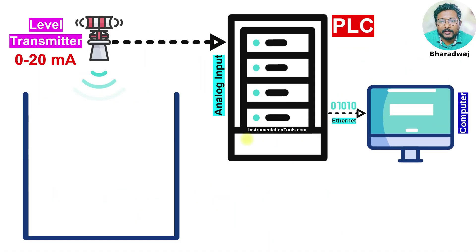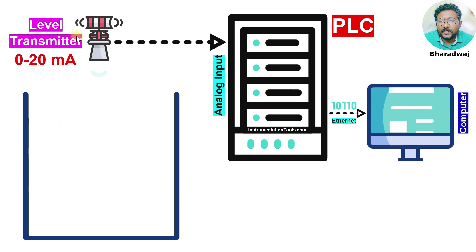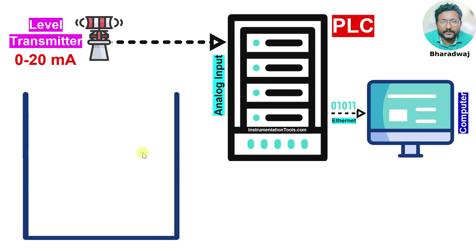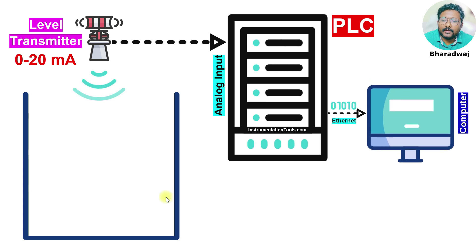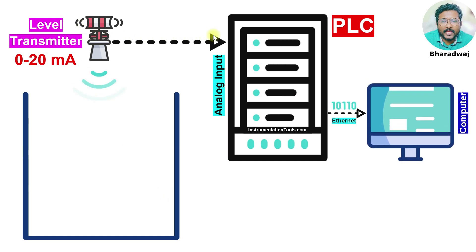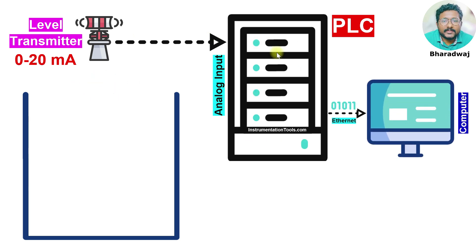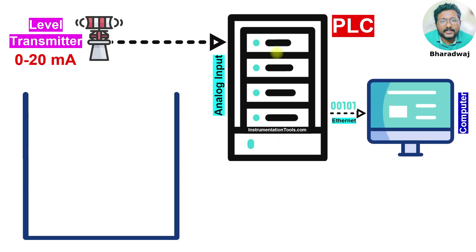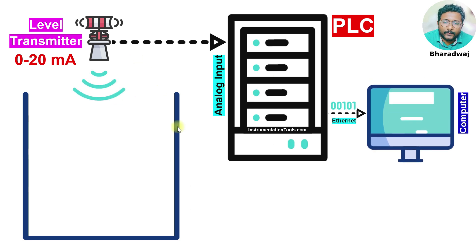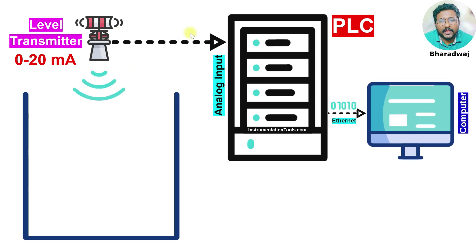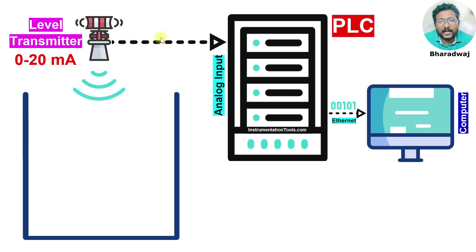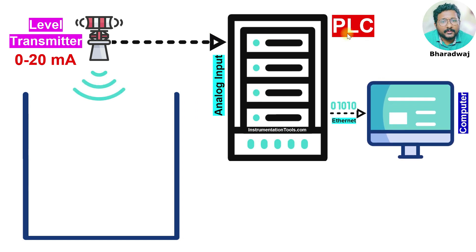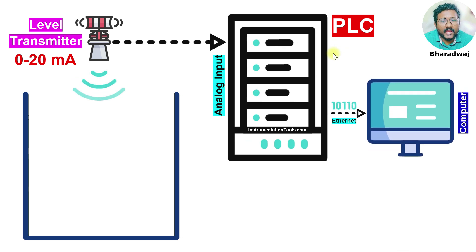I will go through an example. We have a tank and there is a level transmitter which measures the tank level. This transmitter range is 0 to 20 mA. When the tank level is 0%, the transmitter sends 0 mA to the PLC. When the tank is full, the transmitter sends 20 mA to the PLC. If the tank is 50%, the transmitter sends 10 mA to the PLC, and the PLC calculates and displays the equivalent tank level on the computer.